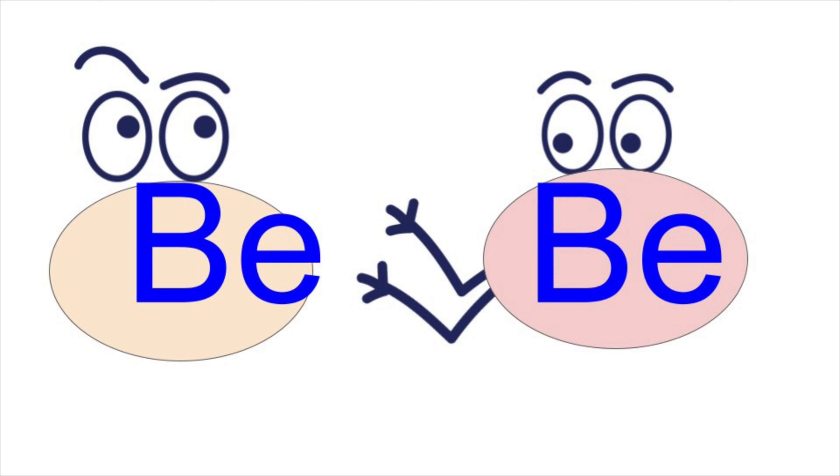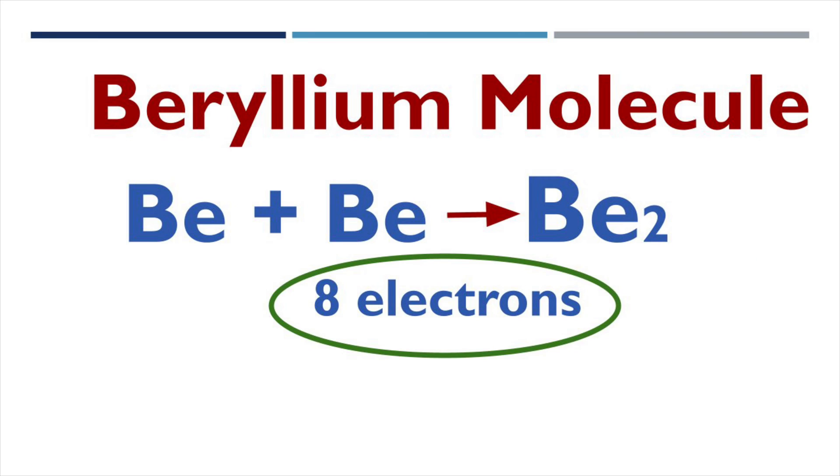Beryllium molecule is formed by the combination of two beryllium atoms. Beryllium atomic number 4. Therefore, there must be 8 electrons present in beryllium molecule.